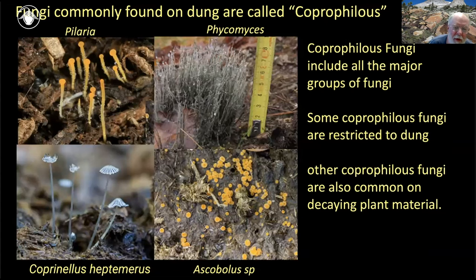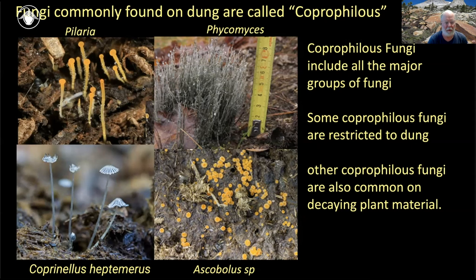Fungi commonly found on dung are called coprophilous, meaning dung-loving. Coprophilous fungi come from all the major groups. Here I'm showing three: the Mucoromycota — typically microscopic fungi that just get into the macroscopic level as a little fuzz on dung — the sac fungi (Ascomycota), and the Basidiomycota, which make little mushrooms on dung. Some of these fungi are restricted to dung as their only habitat, while others are also found on decaying plant material.